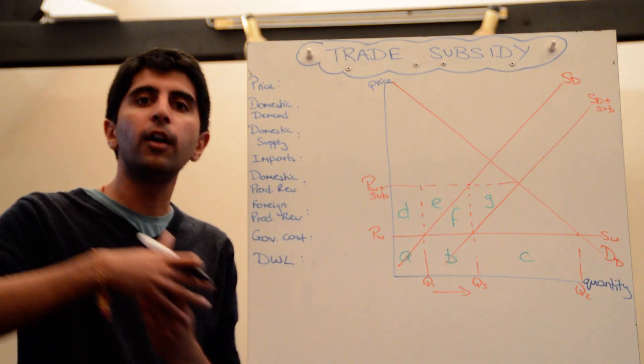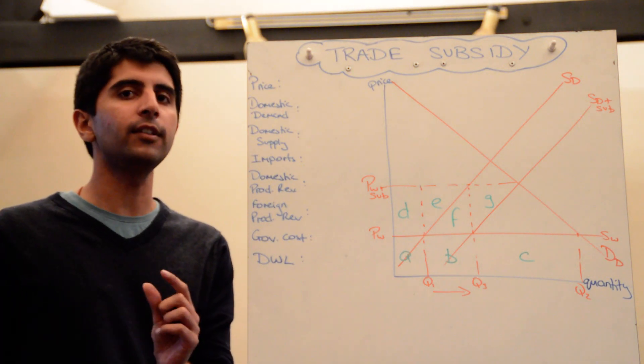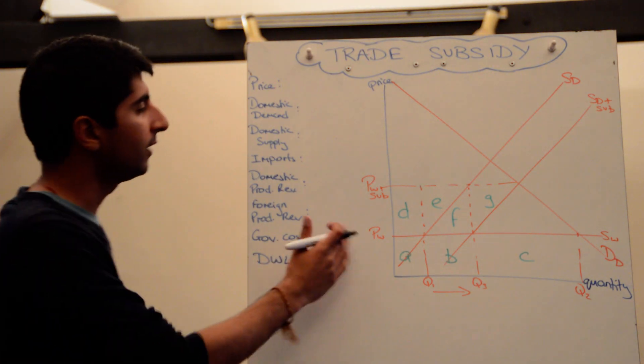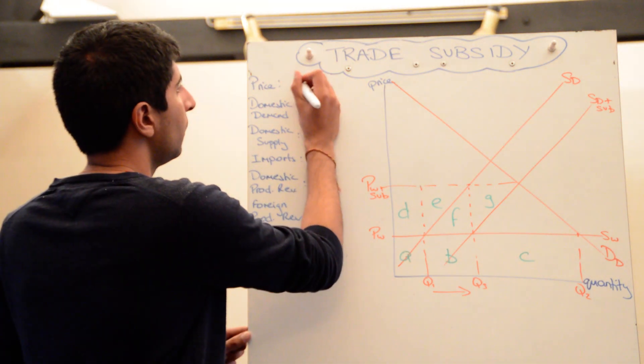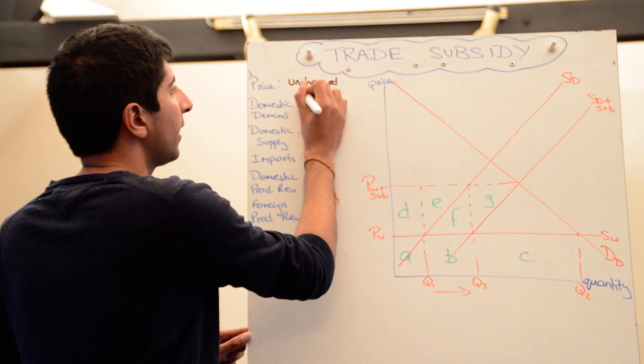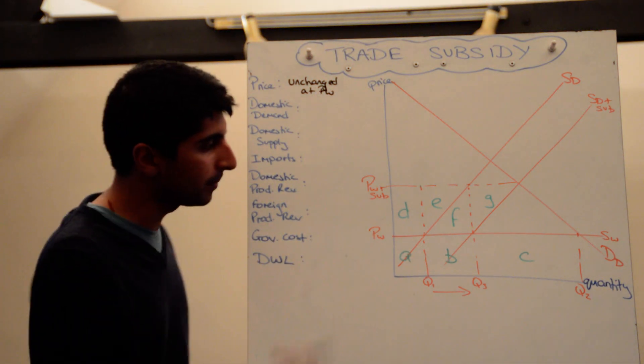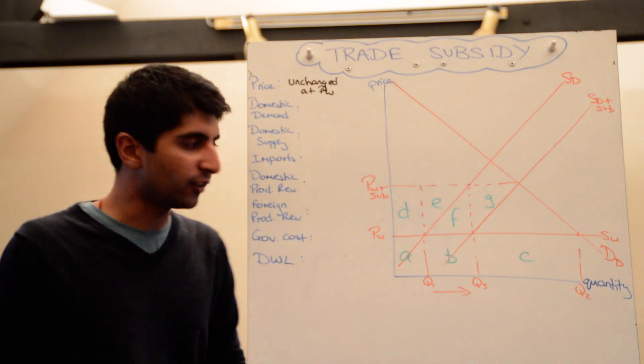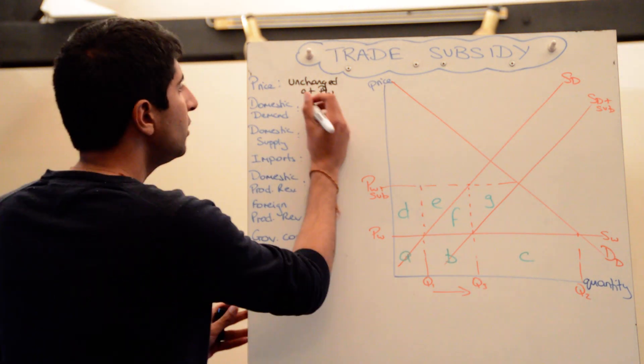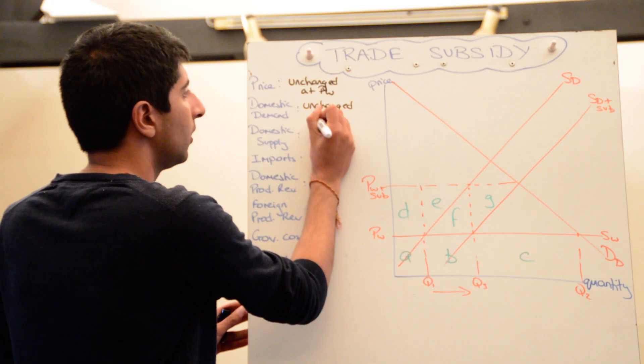Let's start with the impact on price. Remember from my previous video how the price doesn't change - the effective price that domestic suppliers get has increased, but the actual market price stays the same. So unchanged at pw. The price remains at pw, domestic demand unchanged because the price stays the same, so domestic demand remains at q2.